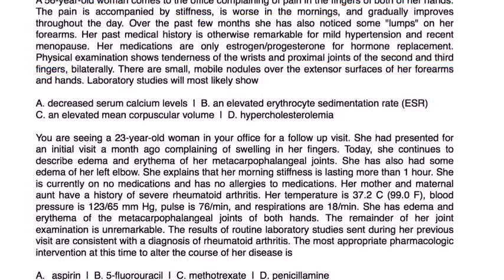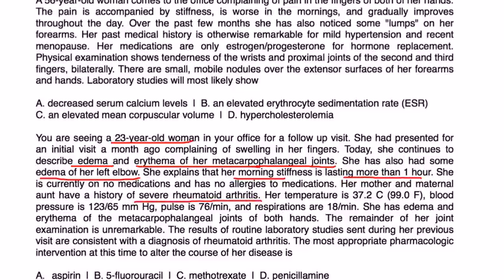And finally, you are seeing a 23-year-old woman in your office for a follow-up visit. She had presented for her initial visit a month ago, complaining of swelling in her fingers. Today, she continues to describe edema and erythema of the metacarpophalangeal joints. She also had some edema of her left elbow. She explains that her morning stiffness is lasting for more than one hour. She is currently on no meds. Her mother and maternal aunt have a history of severe rheumatoid arthritis. She has edema and erythema of the metacarpophalangeal joints of both hands. Results of the labs are consistent with a diagnosis of rheumatoid arthritis.